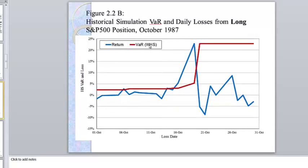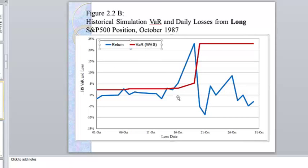When we look at weighted historical simulation, we see something different. We had those 1, 2, 3 breaches, but after the crash, value at risk jumps up and we don't get any more breaches. Still we get breaches, but at least this one reacts after that big crash.